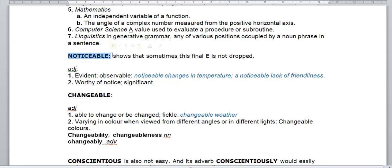Noticeable shows that sometimes the final e is not dropped, sometimes it stays. Adjective, the evident observable, you can see it. For example, noticeable changes in the temperature, or a noticeable lack of friendliness, you can see it.